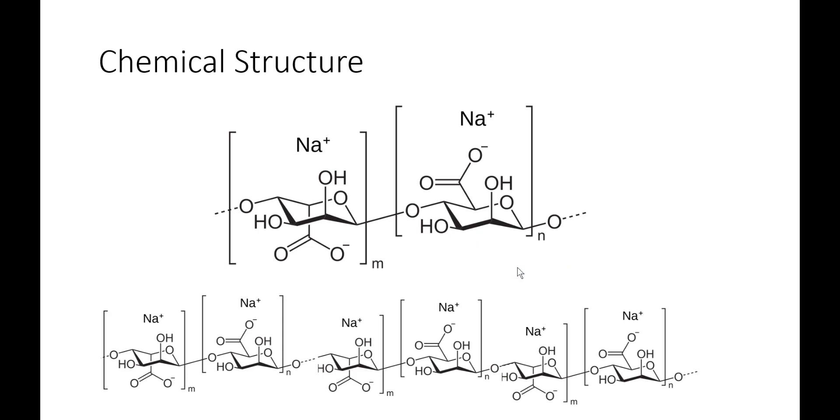So first, let's take a look at the chemical structure of sodium alginate. Obviously, you can see the sodium, so what the heck is an alginate? Well, really it's just a name we've given to this type of polysaccharide, and you can see by this drawing here, well, again, this is a basic chemistry class. This might be overwhelming to some people.